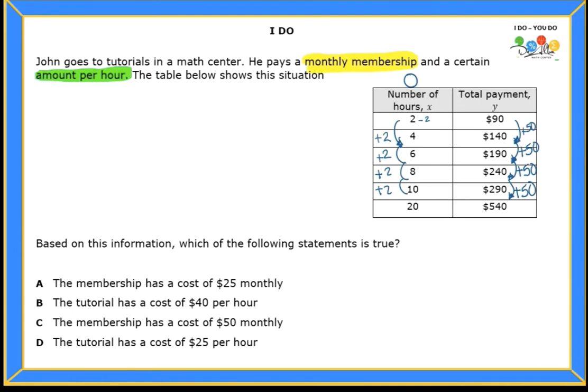So instead of adding to go forward, I'm going to go backwards. So I'm going to take away 90 minus 50. What's 90 minus 50? 40. So what does that mean? That means that before you even go to the tutorials for any hours, you're already paying $40. So what do you think that 40 represents? I hope that you're thinking that that's more than likely that monthly membership. Very good.